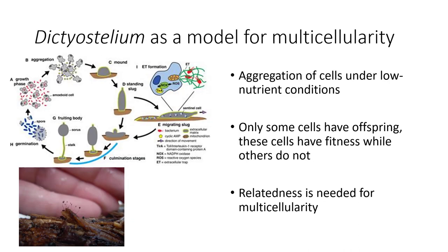One good example of multicellularity as a model system is Dictyostelium. This creature is an aggregation of cells, but they only aggregate when nutrients are low. When they aggregate, they form a little slug that moves toward an area of higher nutrients. If they don't find nutrients, they stop and form a fruiting body to make spores that travel to farther locations. The fruiting body requires a stalk made of organisms that will have no offspring — they sacrifice themselves for others to make spores. This self-sacrifice only happens when they're genetically related to the organisms making spores. Thus, relatedness is needed for multicellularity.